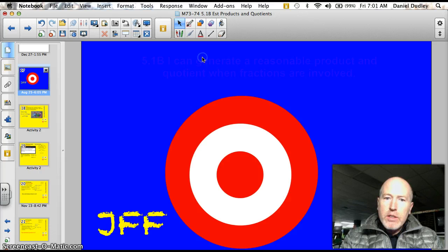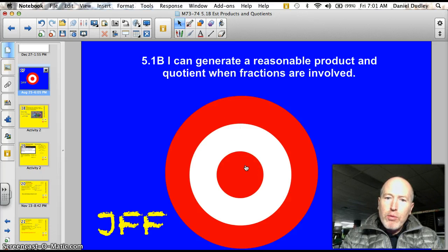But first, the official target for tonight is 5.1b. I can generate a reasonable product and quotient when fractions are involved.